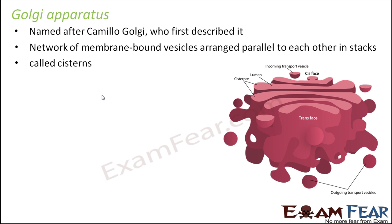It is a network of membrane-bound vesicles arranged parallel to each other in stacks called cisterns. Vesicles are containers bound by membranes. They are arranged parallel to each other, and each of these parallel stacked units is known as a cistern.